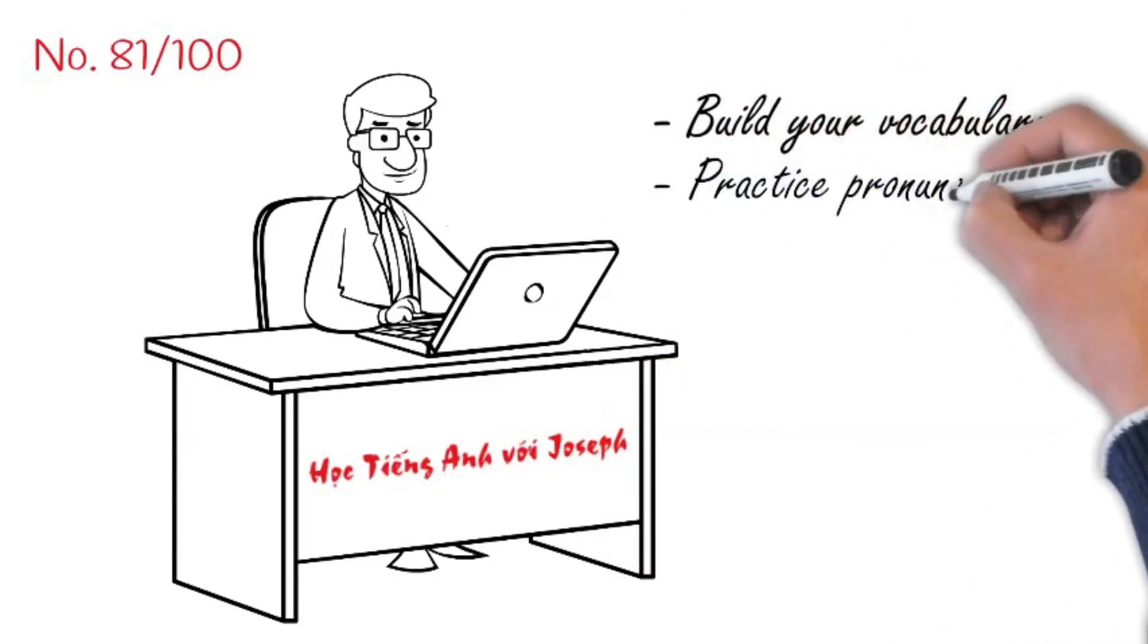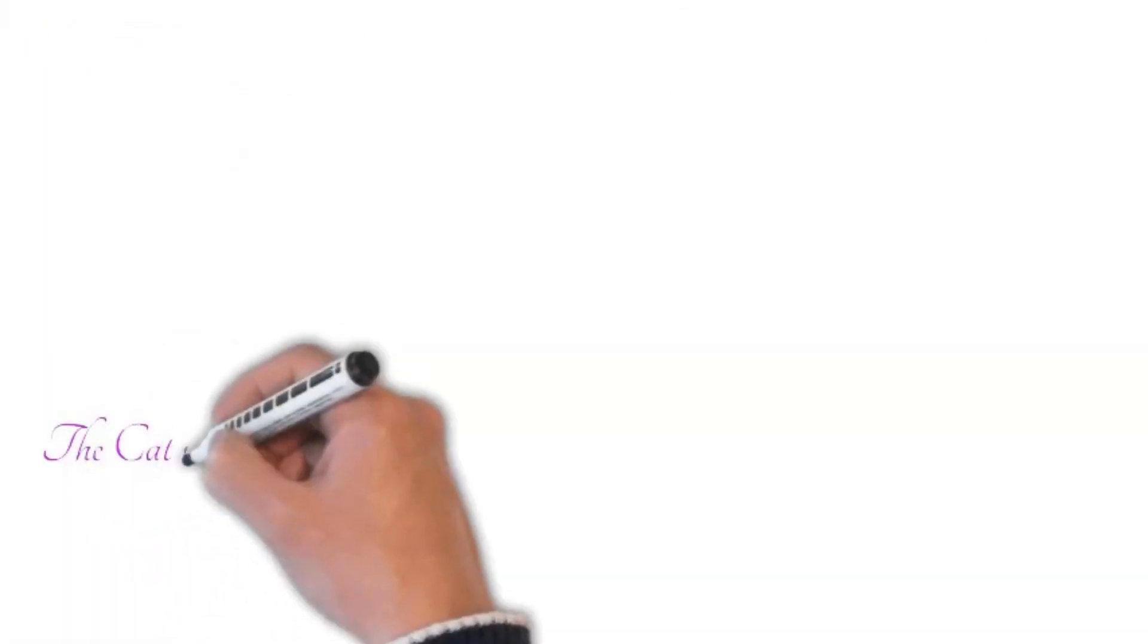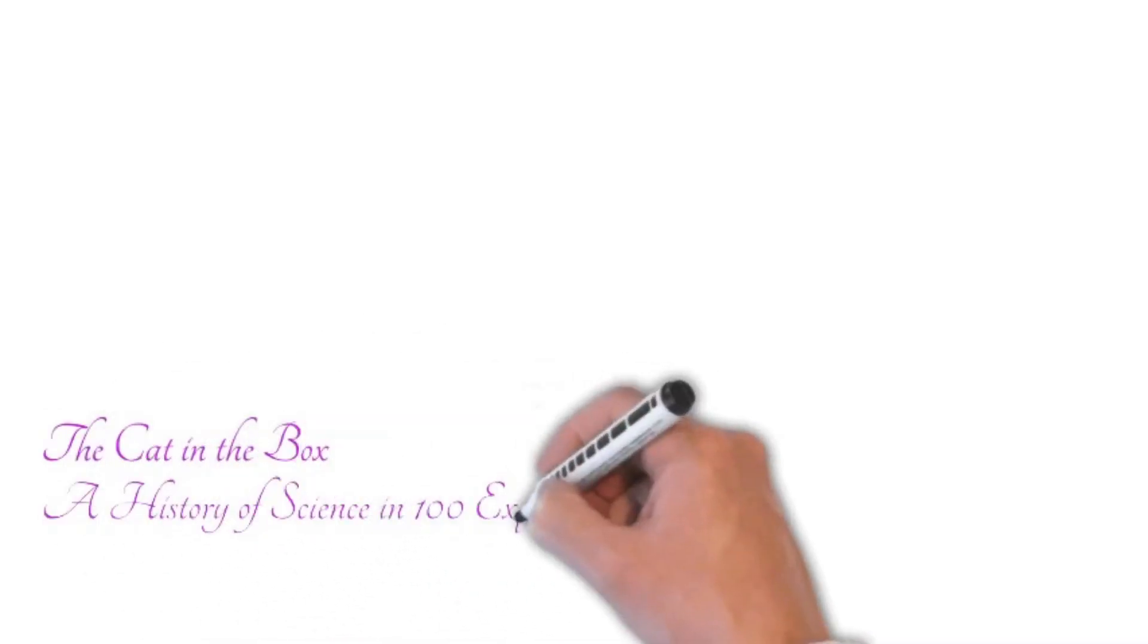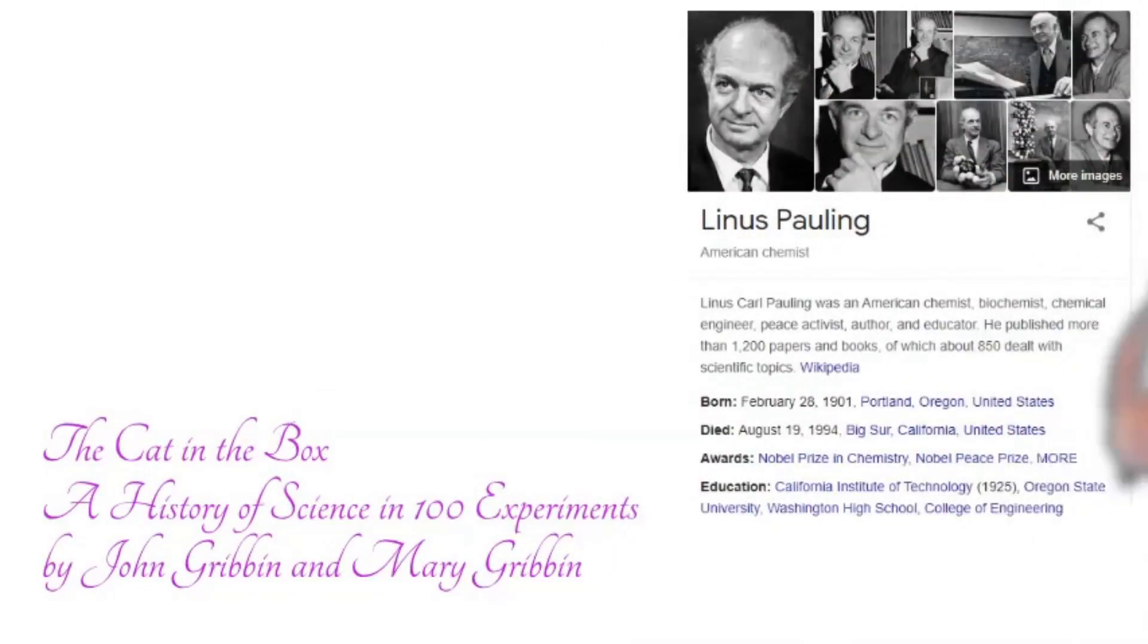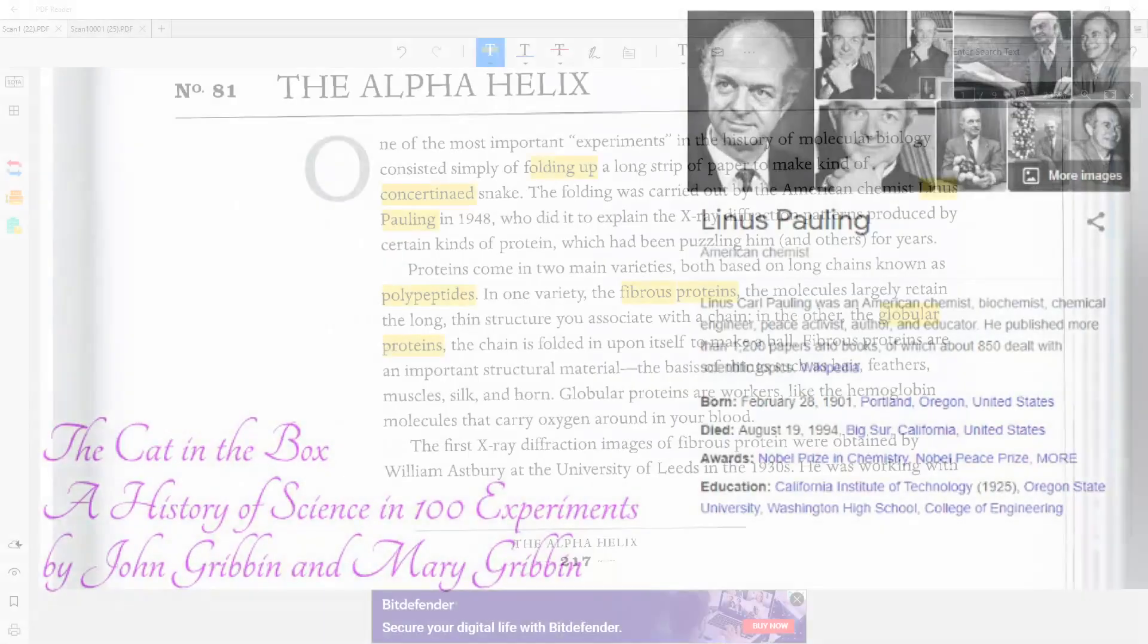Continuing with The Cat in the Box, a history of science in 100 experiments, today we will read story number 81. Hôm nay chúng ta sẽ đọc chuyện số 81, The Alpha Helix.